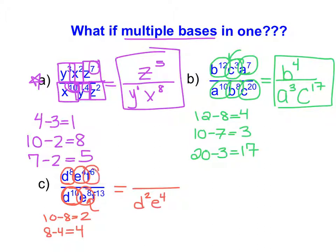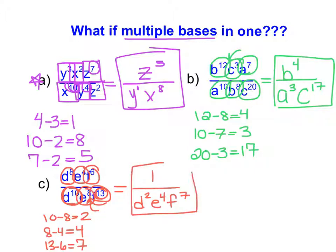Finally, I have f to the power of 6 and f to the power of 13. 13 minus 6 leaves me with 7 f's, or f to the power of 7. So I'm going to have f to the power of 7 in my denominator, because 13 is larger and located in my denominator. Now because all of my larger exponents were in the denominator, I still have to have a numerator — I can't just leave it blank. If there's nothing left in our numerator, you can assume that our numerator is 1.